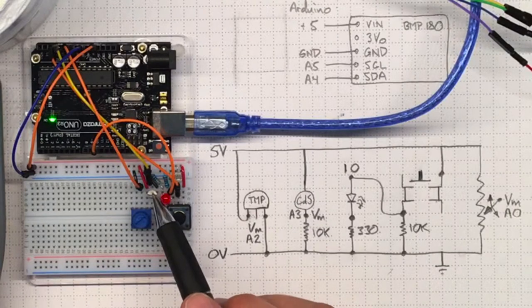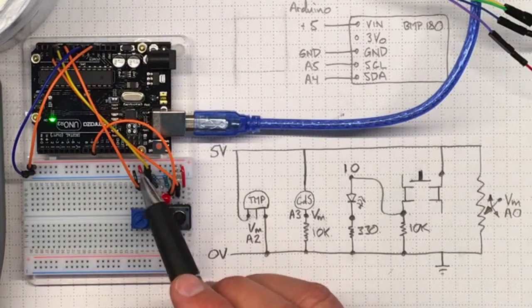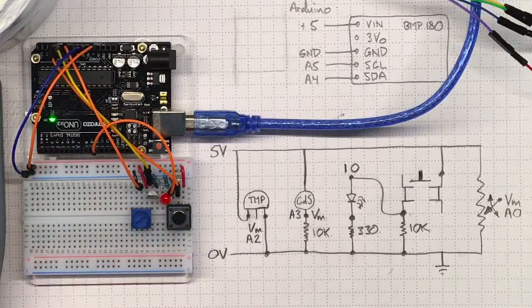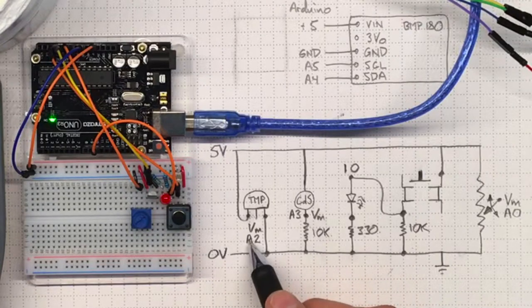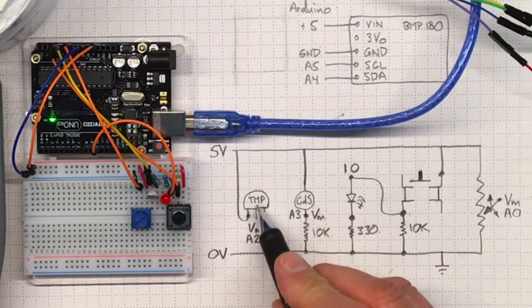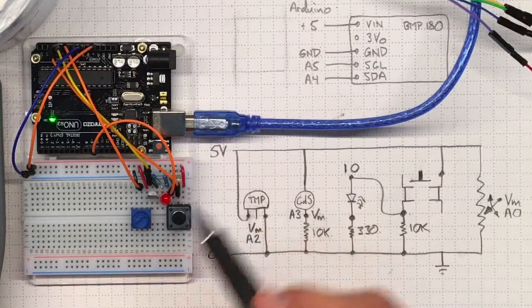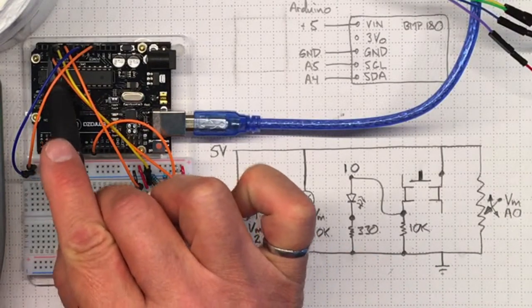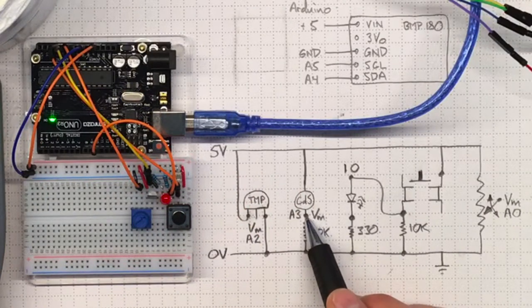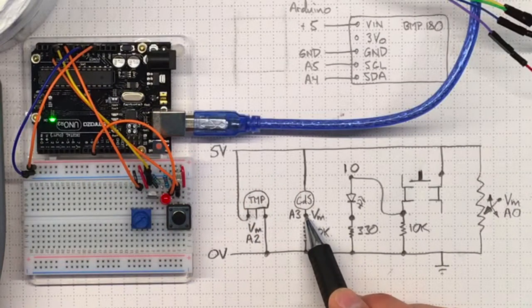We've got a TMP36 with its output going to analog pin A2 over here, and we've got a cadmium sulfide photocell with the output going to analog pin A3 from the measured output on that photocell.